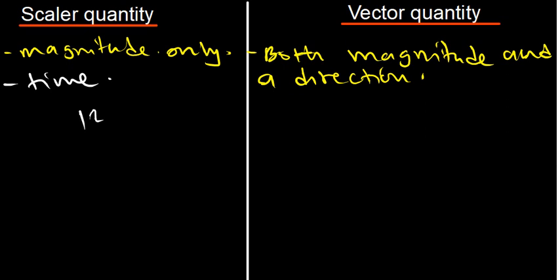Now let's also think of speed. Speed is also one of the examples of scalar quantity. We can also think of distance.